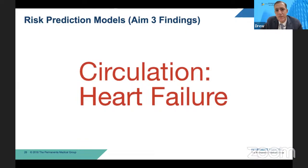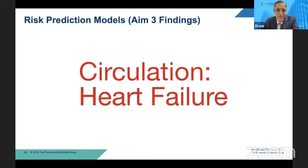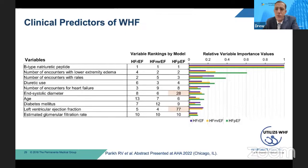It looks like we're good on time, so I'm going to share the results from aim three of our study, where we attempted to develop risk prediction models. We presented this just recently at AHA and it's currently under review at Circulation Heart Failure. We were interested in identifying both individual risk factors as well as developing clinical risk prediction models for worsening heart failure events and death. On this slide, I'm showing the individual clinical predictors of worsening heart failure and the relative variable importance values for each, stratified by ejection fraction — HFrEF, HFmrEF, and HFpEF.